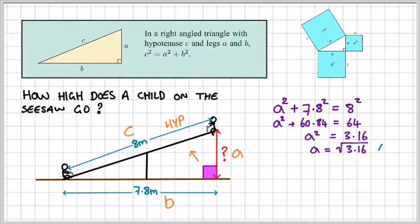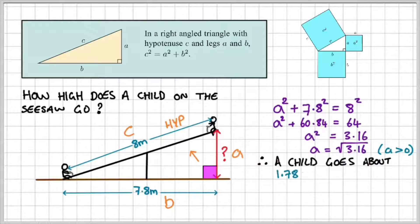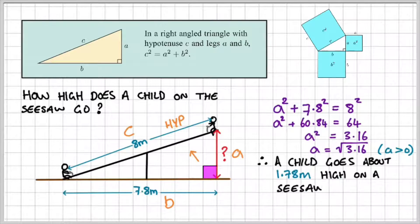So therefore, a would equal the square root of 3.16. So remember, we're only taking the positive square root of 3.16 because a is going to be greater than 0. This is going to be a positive value. So if we find the square root of 3.16, we can therefore say a child goes about 1.78 meters above the ground.